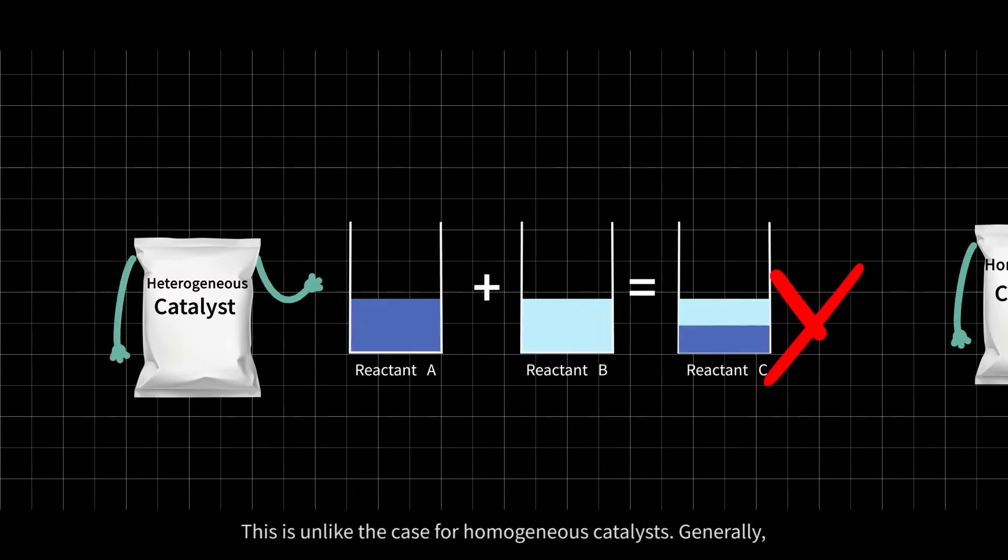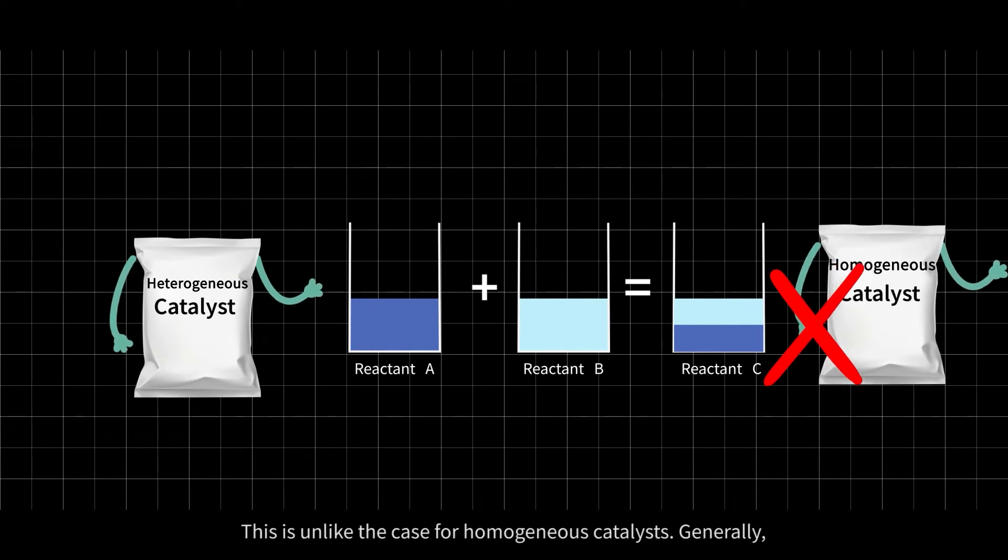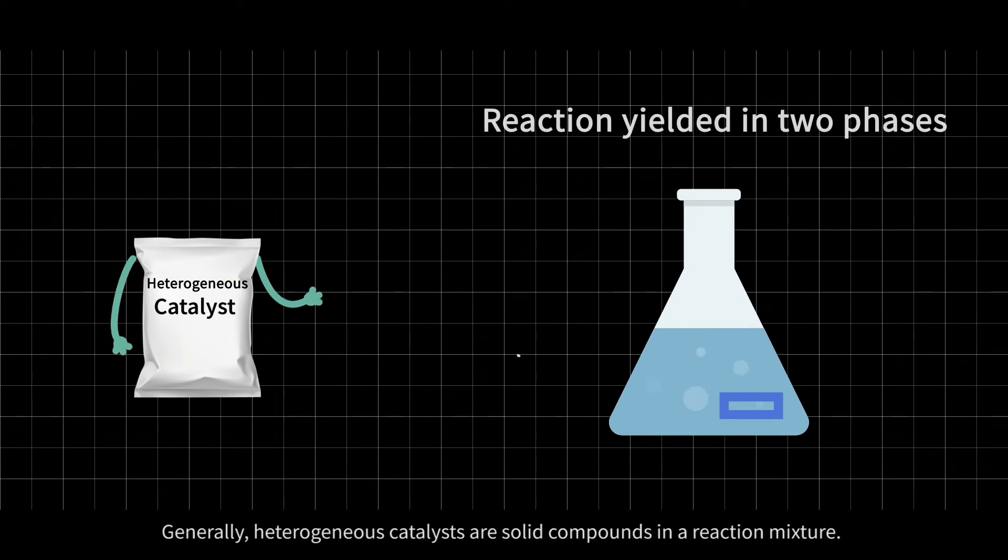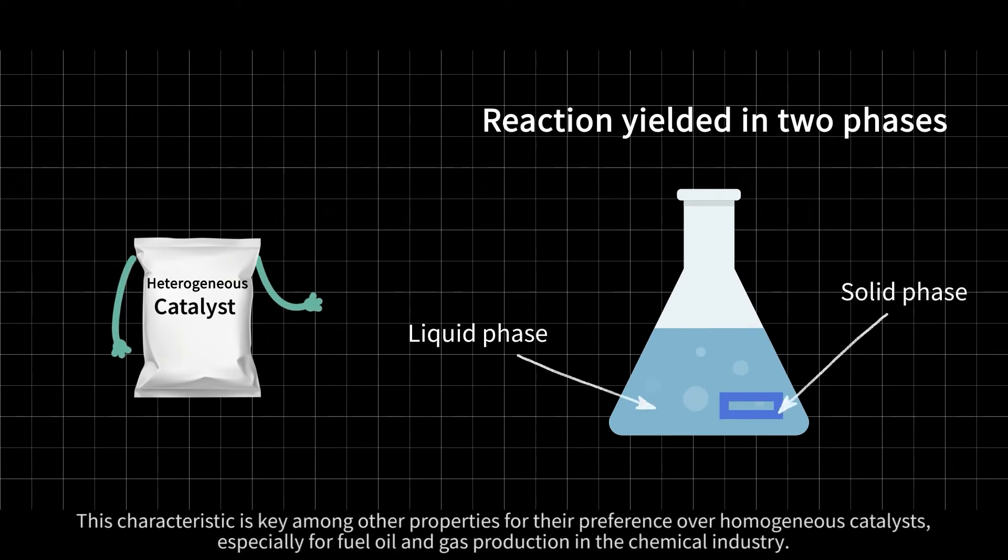This is unlike the case for homogeneous catalysts. Generally, heterogeneous catalysts are solid compounds in a reaction mixture. This characteristic is key among other properties for their preference over homogeneous catalysts, especially for fuel oil and gas production in the chemical industry.